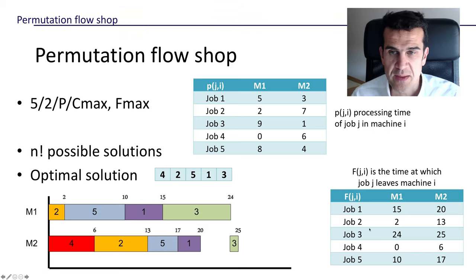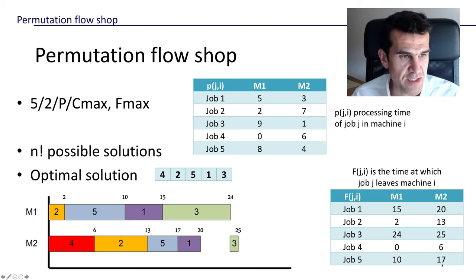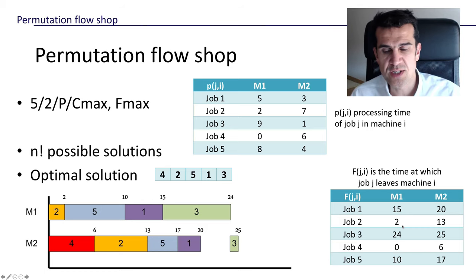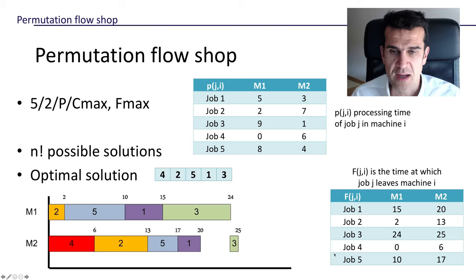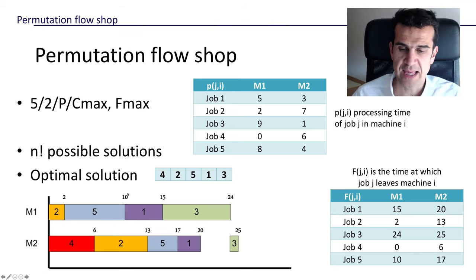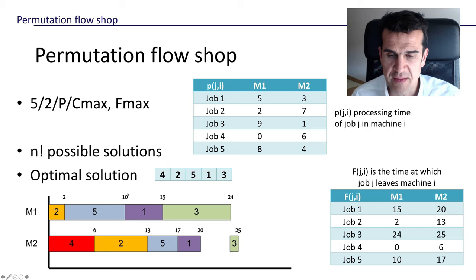From this matrix it will be very easy to compute C-max, which is the maximum of the matrix, or f-max, or the average flow time, which is the average of the last column. We're going to learn to compute this matrix with a computer, and later in programming classes we will actually implement this algorithm. Let's start by doing the Gantt chart and then see the underlying algorithm.